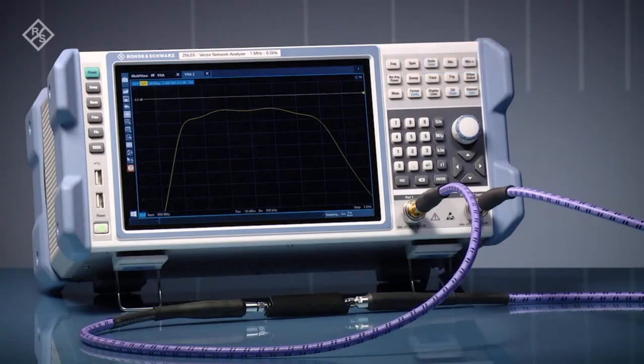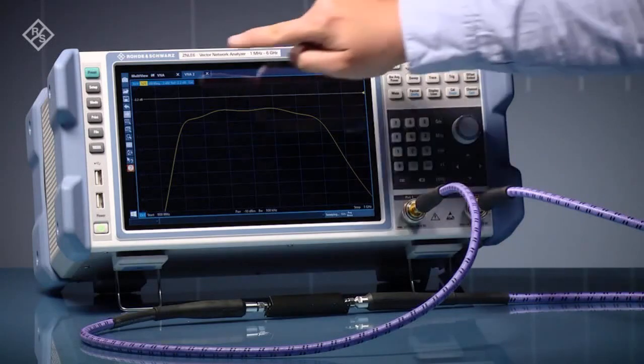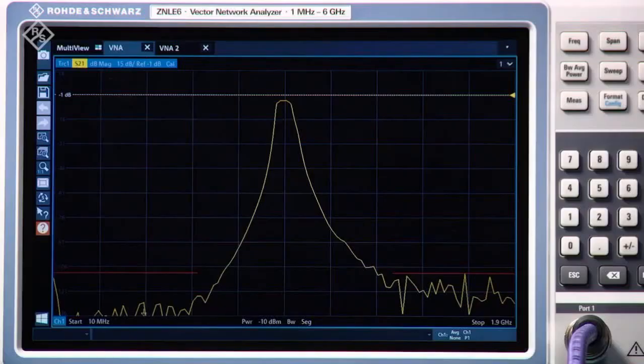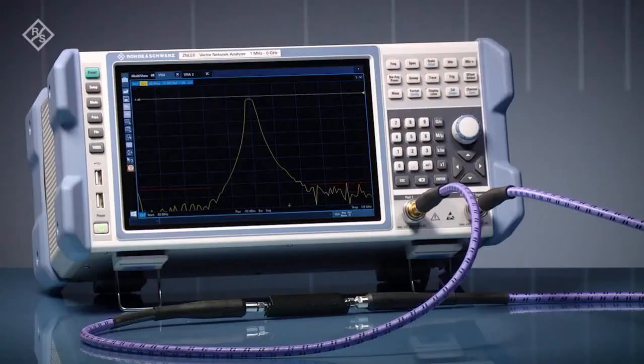Are you using a steep filter? The ZNLE offers you a wide dynamic range of typically up to 120 dB for your measurement. All these features make the ZNLE ideal for your everyday testing needs.